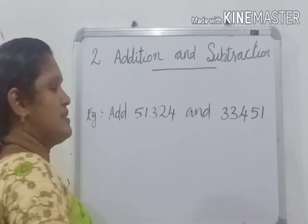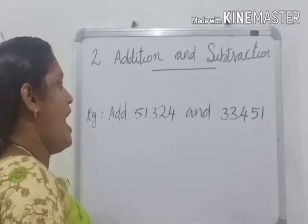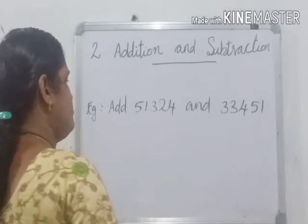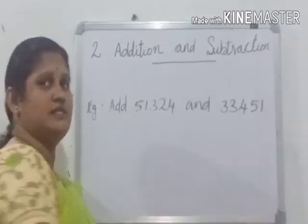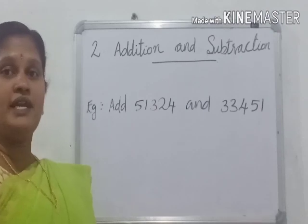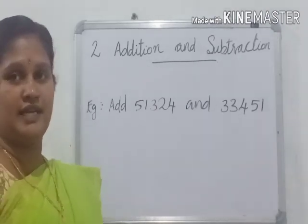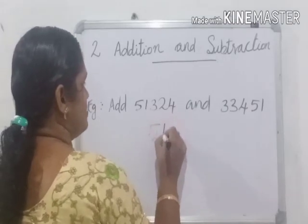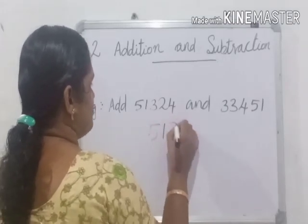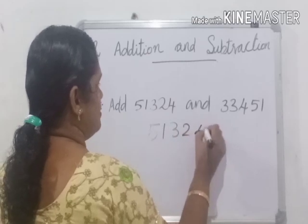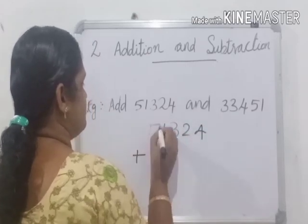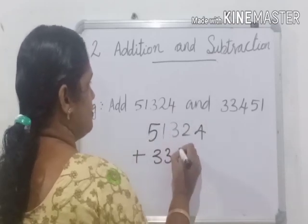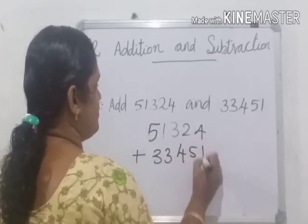For example, add 51,324 and 33,451. To add these two numbers, we will place one number below the other number.